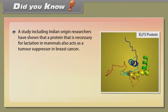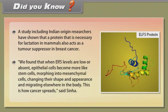Did you know? A study including Indian-origin researchers has shown that a protein necessary for lactation in mammals also acts as a tumor suppressor in breast cancer. When ELF5 levels are low or absent, epithelial cells become more like stem cells, morphing into mesenchymal cells, changing their shape and appearance, and migrating elsewhere in the body. This is how cancer spreads, said Sinha.